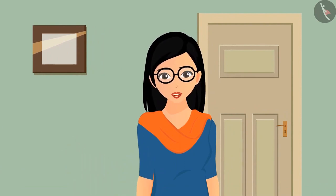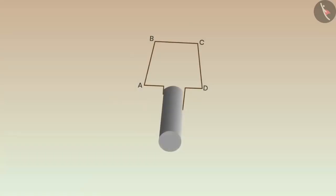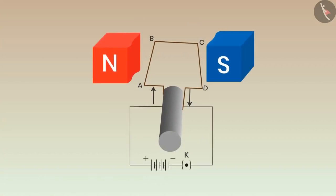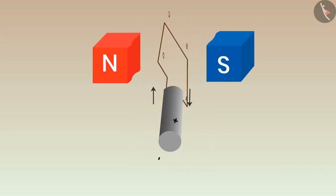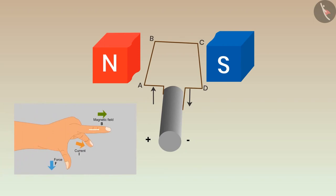If you look at the cross-section of a motor, lots of wire and magnets can be seen. If a rectangular coil ABCD is placed in a magnetic field and the ends of the coil are connected with the source of electricity, electric current starts flowing through the coil when we put on the switch. Applying Fleming's left-hand rule on arm AB: the direction of the magnetic field is from north to south, and the current is flowing in a certain direction on arm AB, so the force will be exerted downwards.